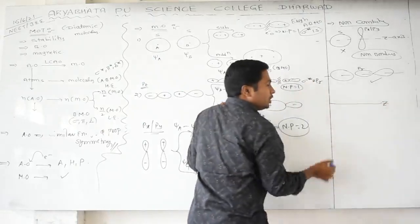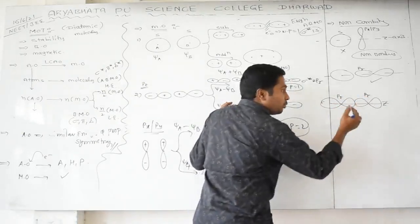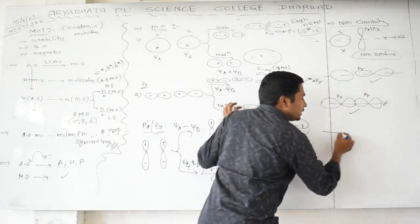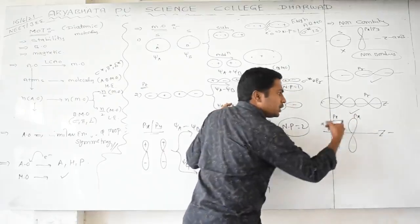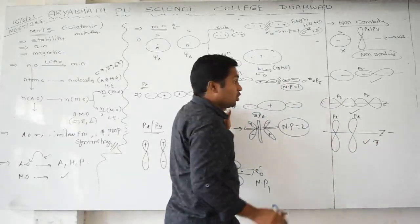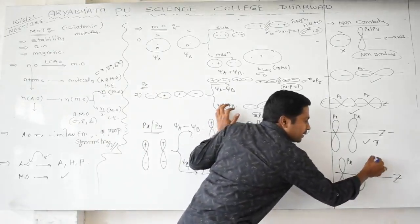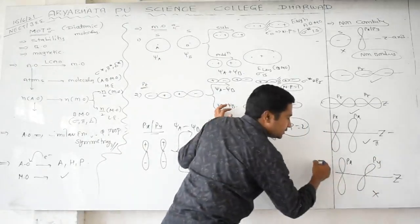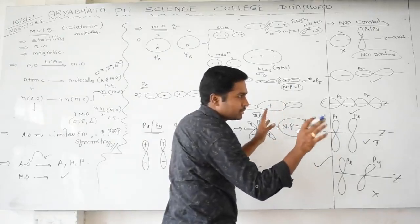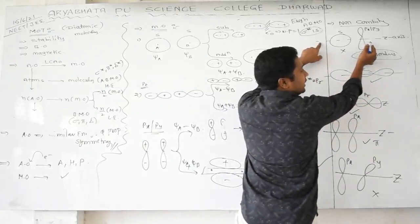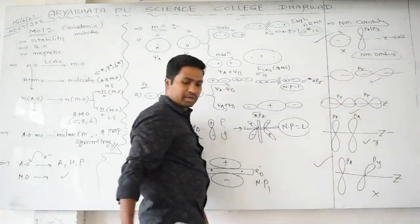When two atoms approach through the internuclear z-axis: pz + pz gives sigma bonding/anti-bonding; px + px or py + py gives π bonding or π anti-bonding. However, if from one atom px comes and from another atom py comes along the z-axis, there is no chance for overlapping or combination. Similarly, s and py (or px) cannot participate — these are non-bonding cases, which are very important for competitive exams.